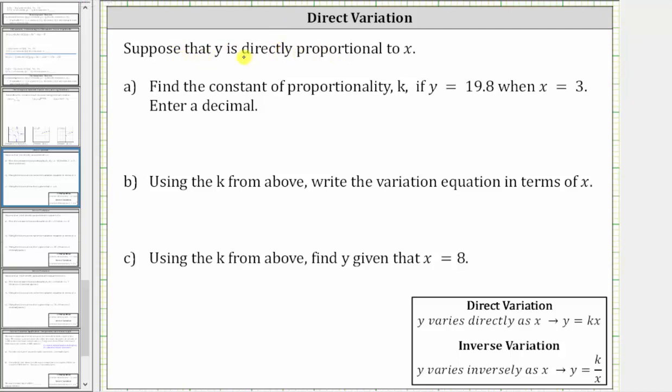Suppose that y is directly proportional to x. Because we are told y is directly proportional to x, or if we're told y varies directly as x, we have direct variation, and we use the equation y equals k times x, where k is a constant of proportionality.